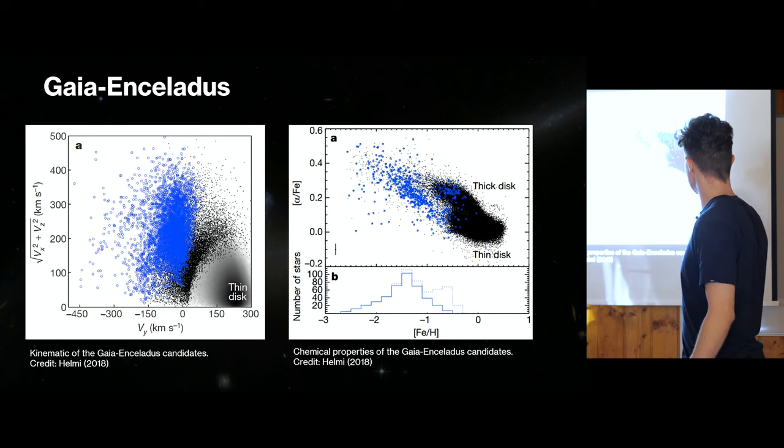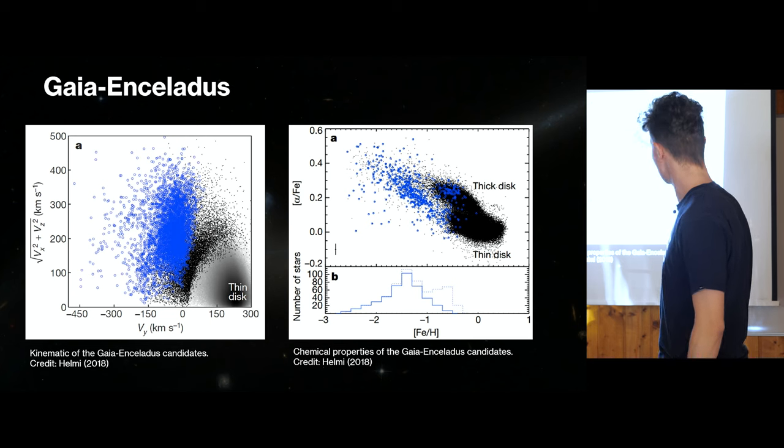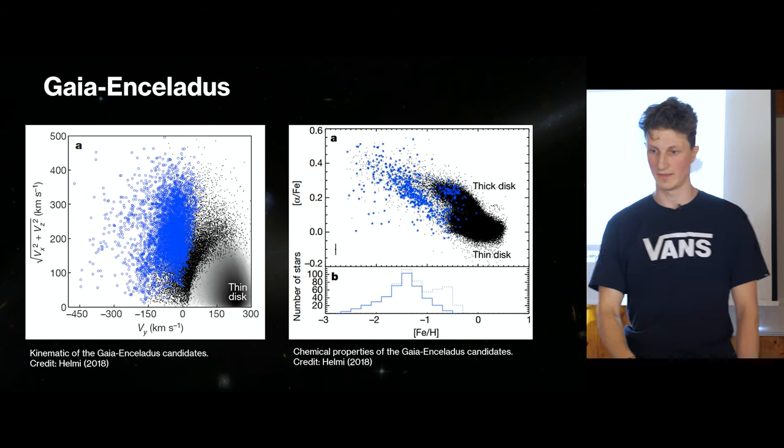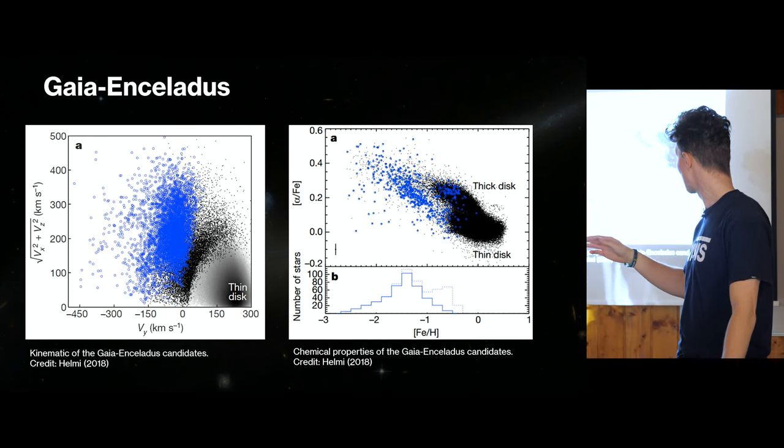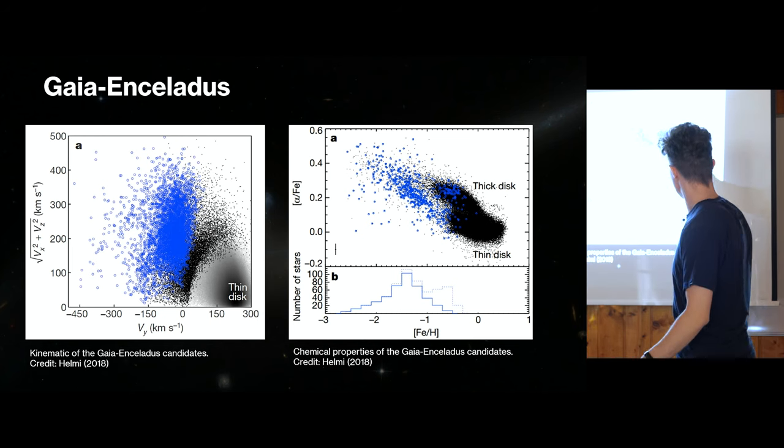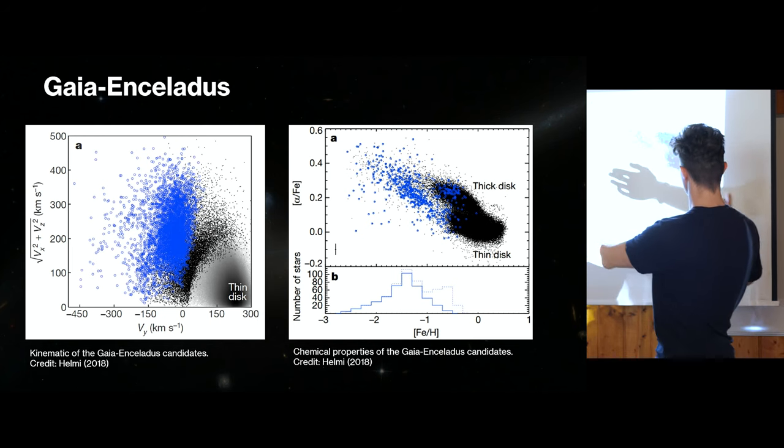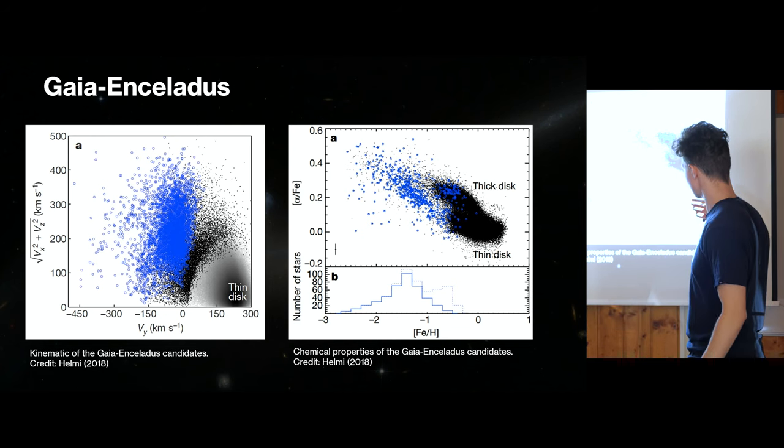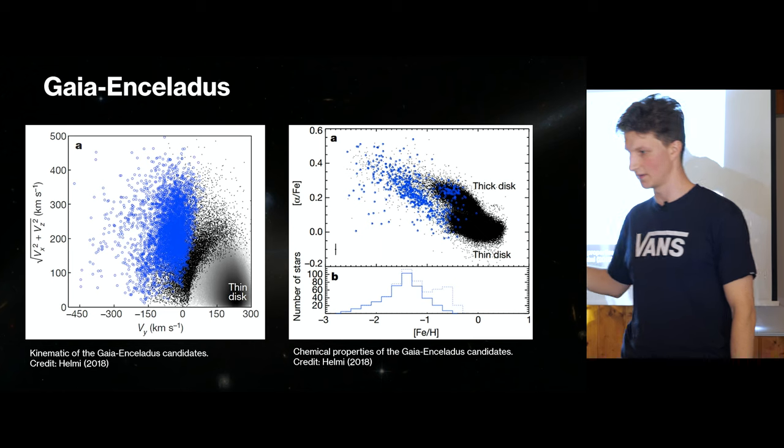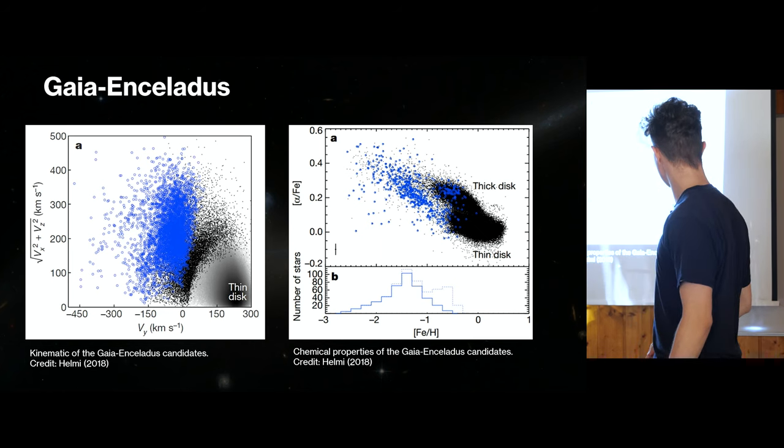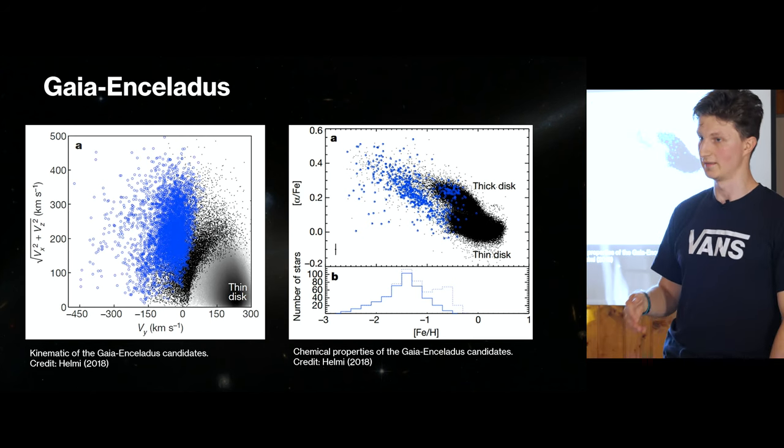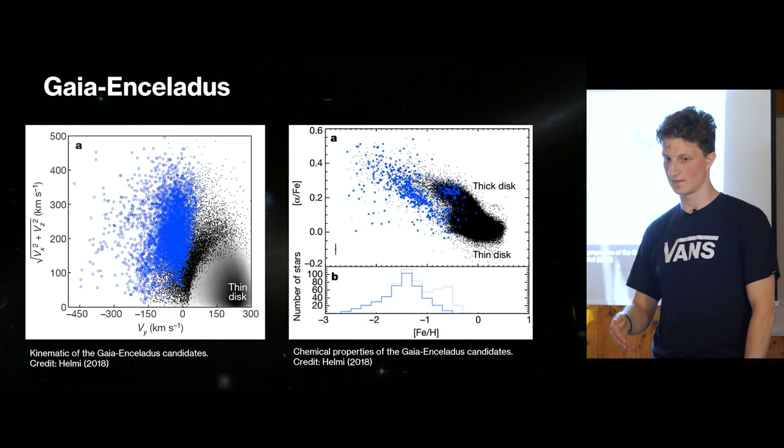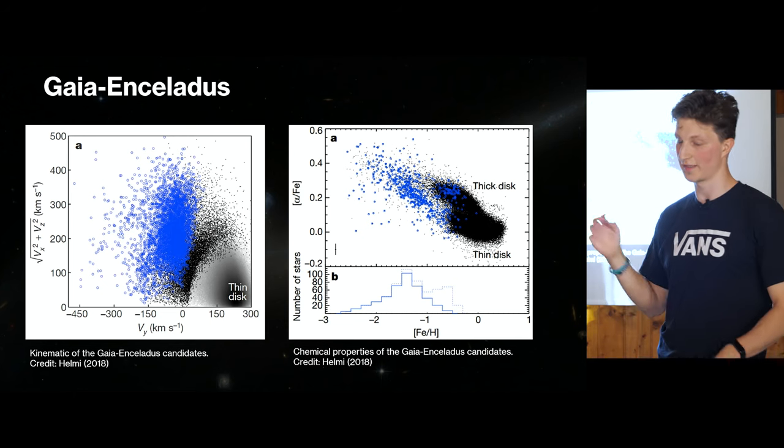When they analyzed the chemical properties of such stars, they found that they have even different chemical abundances. Here you can see that they are absolutely different than the thin disk. And even what is very important is that they are not only in one place, for example here, but it is a broad amount of abundances which leads to the conclusion that they originated in a larger structure. And this larger structure is Gaia-Enceladus galaxy which merged with our galaxy.